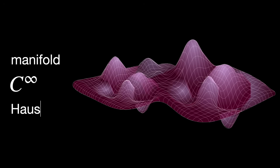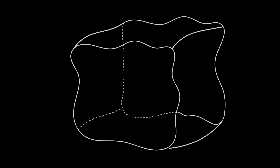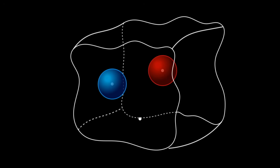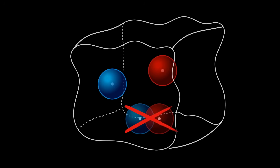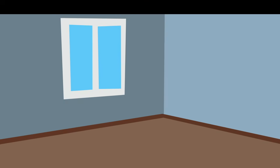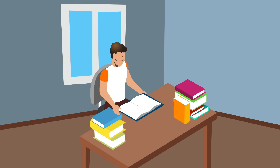Another important property is that the space is Hausdorff. This just means you can separate any two different points with their own bubble — open sets that don't overlap. In a regular space, like the room you are probably in, if you pick two points, you can create a little ball around each such that they don't touch. That's Hausdorff.